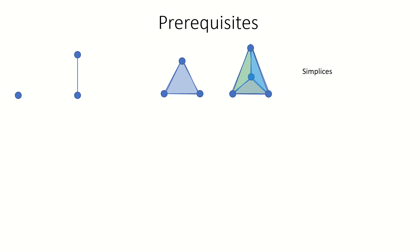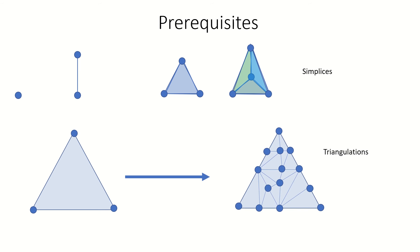Hello Vital Sign! Today we're going to talk about Sperner's Lemma, an interesting result from combinatorics that concerns colorings of simplices. To understand Sperner's Lemma, we'll need to go over three concepts first: simplices, triangulations, and Sperner colorings.